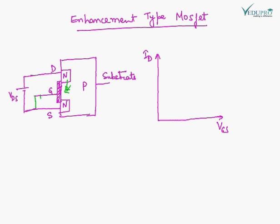Now, when I connect a negative battery, if I disconnect this and connect a negative battery, still there will be no current because the channel is still incomplete.